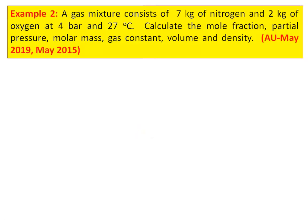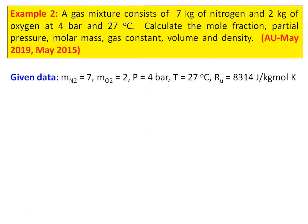We take the second example. A gas mixture consists of 7 kg of nitrogen and 2 kg of oxygen at 4 bar and 27°C. Calculate the mole fraction, partial pressure, molar mass, gas constant, and volume and density of the gaseous mixture. This is from the Anna University question paper May 2019 and May 2015. Given data: mass of N2 = 7 kg, mass of O2 = 2 kg, pressure P = 4 bar, temperature T = 27°C, universal gas constant Ru = 8314 J/kg·mol·K.